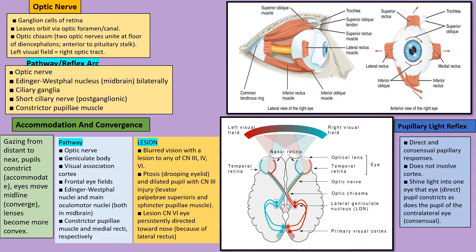The pupillary light reflex is very important and always asked in exams. When you shine light into the pupil, it constricts — that is the direct light reflex for the same eye; the indirect or consensual reflex is for the other eye. The pathway of the reflex arc is: optic nerve → Edinger-Westphal nucleus → ciliary ganglion → short ciliary nerve. The Edinger-Westphal nucleus is present in the midbrain and is involved in both the pupillary reflex and the accommodation response.